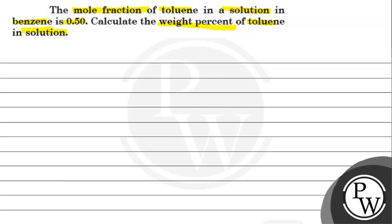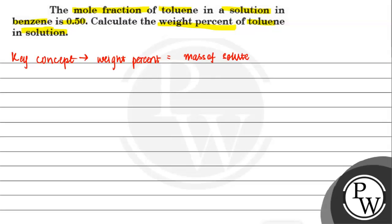So we have to calculate the weight percent of toluene. We have to look at this question's key concept. The key concept of this question will be the weight percent formula. Weight percent is equal to mass of solute divided by mass of solution, into 100 to convert it into percent. So this is the formula for weight percent.